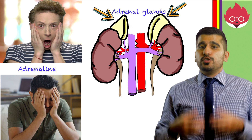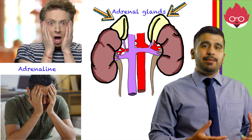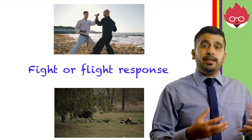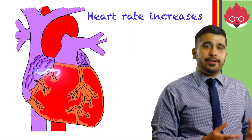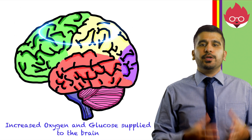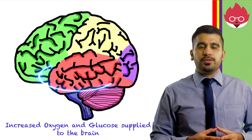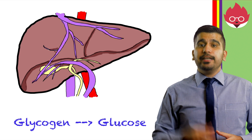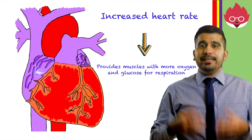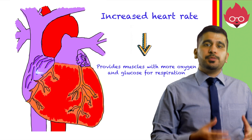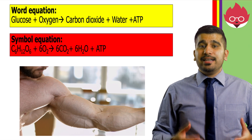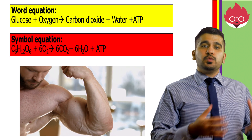Your adrenal glands release adrenaline during times of stress or fear. It prepares your body for the fight or flight response. It targets vital organs, increasing the heart rate and boosts oxygen and glucose delivery to the brain and muscles. Glycogen is also converted to glucose in the liver cells, increasing blood glucose. An increased heart rate and glucose provide the oxygen and energy needed for muscles to contract.